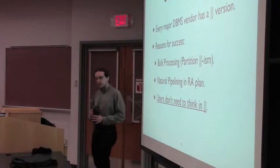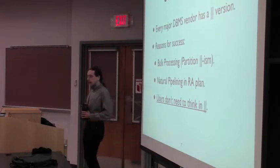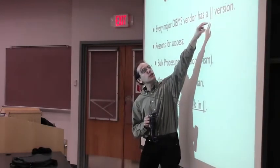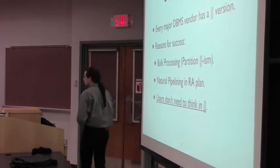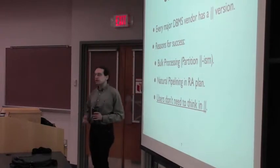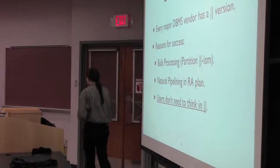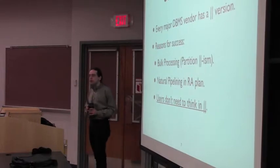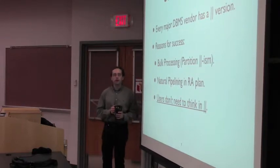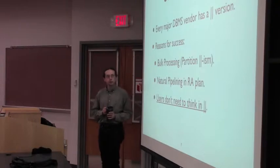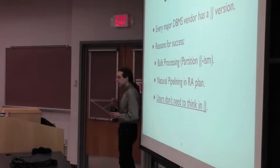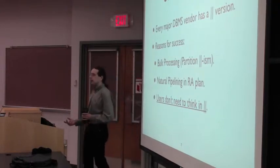So essentially what this led to is databases were essentially sort of the first real success story in parallelism. And I'll be using the abbreviation of two parallel lines as parallelism. And literally every single major database vendor, Oracle, IBM, Microsoft, has some form of parallelism built into their major database systems or has a partner product that does parallel computation.